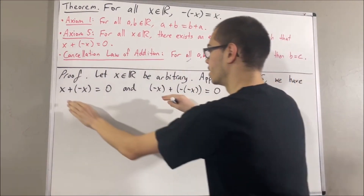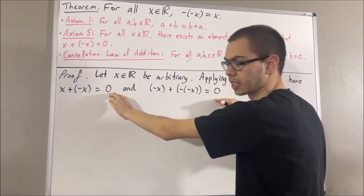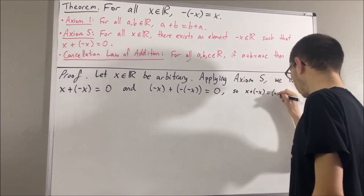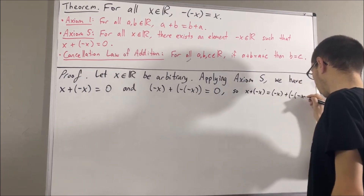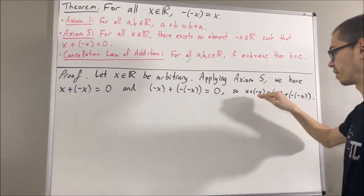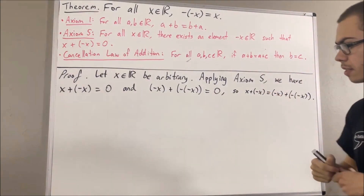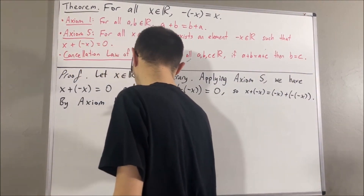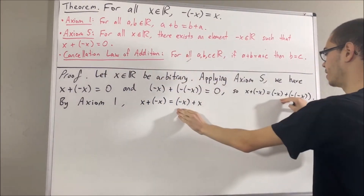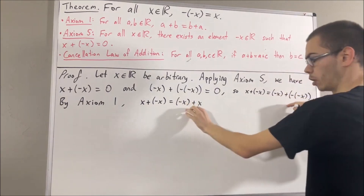Notice these two expressions are both equal to the same thing, so they must be equal to each other. By Axiom 1, we have that x plus the negative of x is equal to the negative of x plus x. So since these two guys are both equal to the same thing, they must be equal to each other.